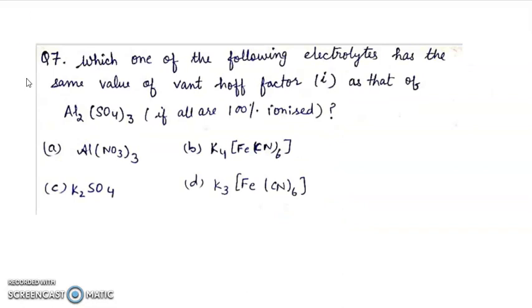Question 7: which one of the following electrolyte has same value of Van't Hoff factor as that of aluminum sulfate if all are 100% ionized? Al2(SO4)3 has 5 ions, so i will be 5. Now we need to find option where i value is 5. A has 4, B has 5, C has 3, and D has 4. So answer will be B.